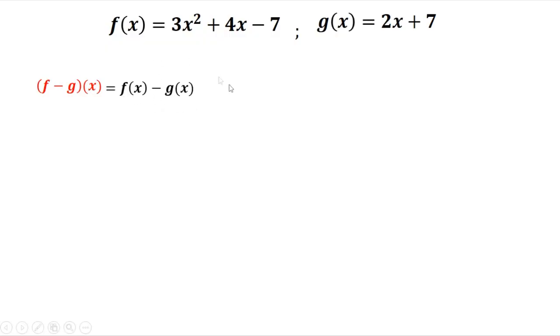Now f of x, that's 3x squared plus 4x minus 7, minus, but you need to put your second function inside the parentheses, so 2x plus 7. Then you distribute this negative sign to every term.